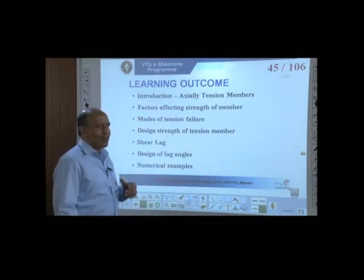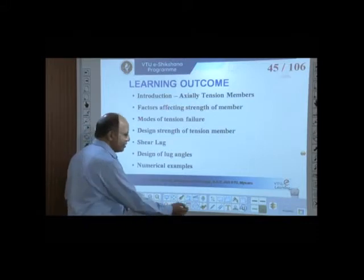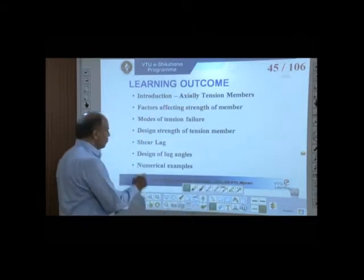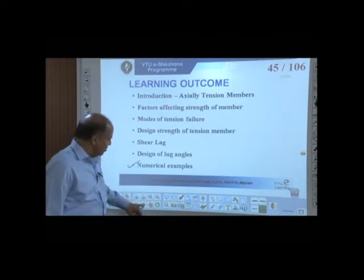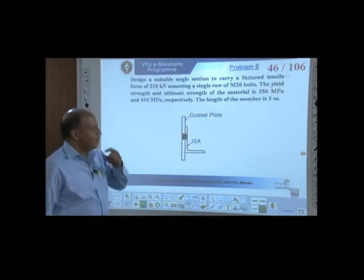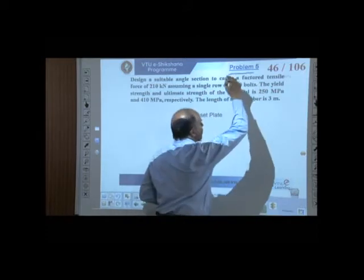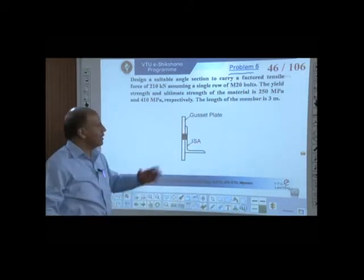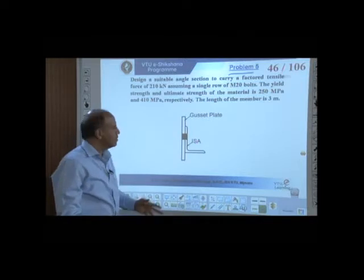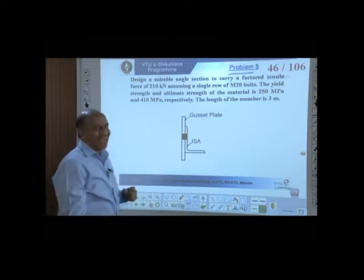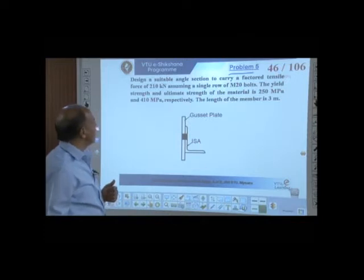We are now familiar with what we have covered. The only thing we are doing now is numerical examples. So let us start problem number 5. This happens to be again a bolted connection — a right single angle. Let us look into the problem we have here.